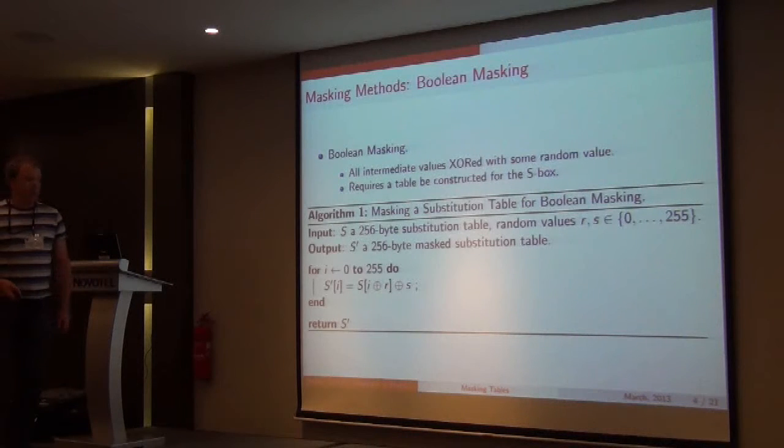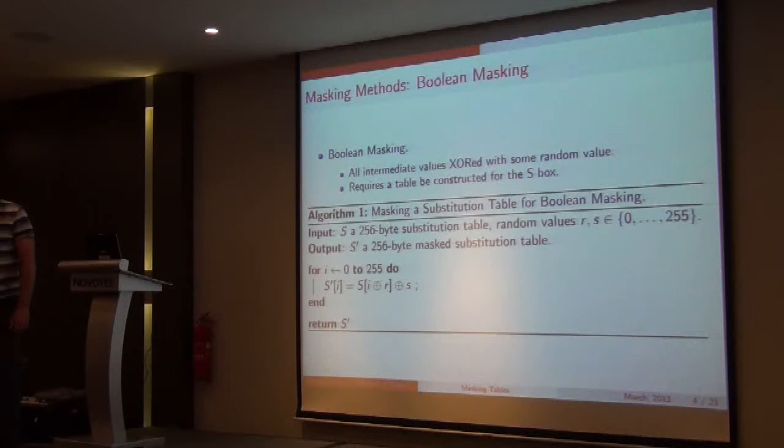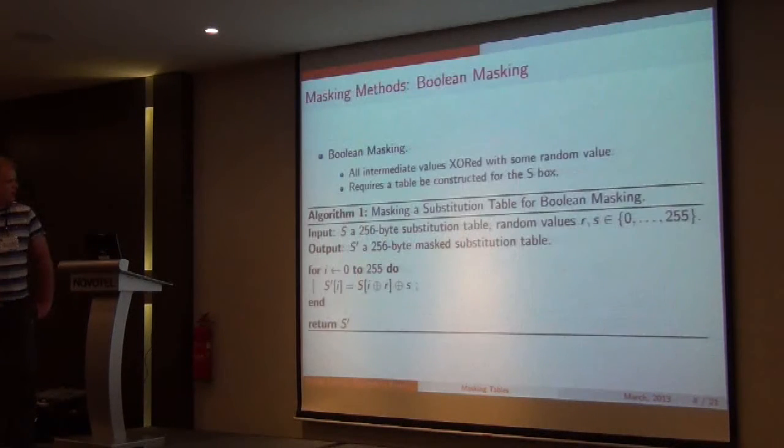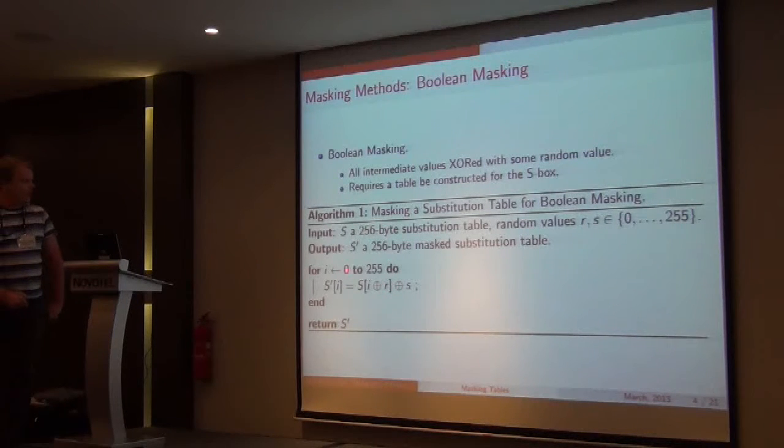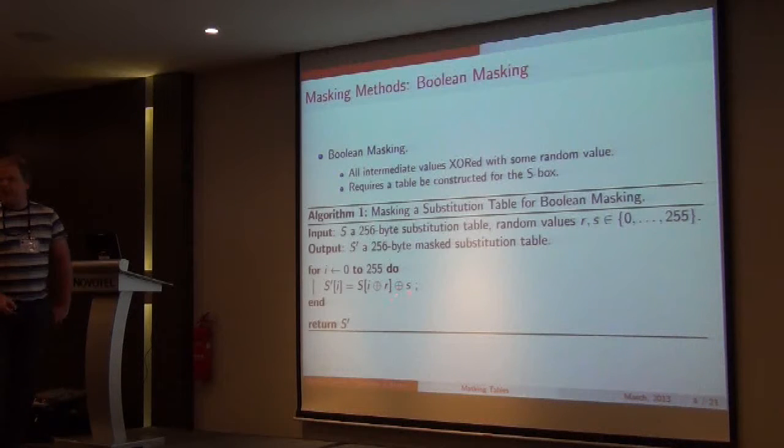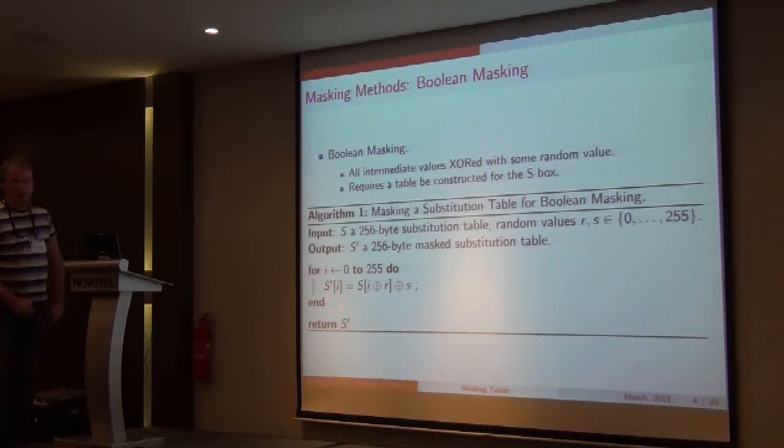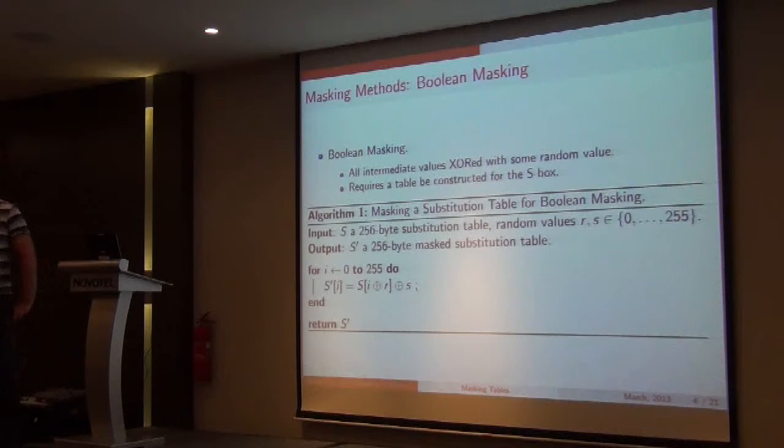This poses problems, as described by Tom, when you have a nonlinear function. So for an S-box for AES, you're required to construct a table in memory. So we have our S-box S, we're XORing an index with a random value R. Then the value of that index is XORed with another random value S to produce a table in memory S' that we can then use to correctly compute an AES.